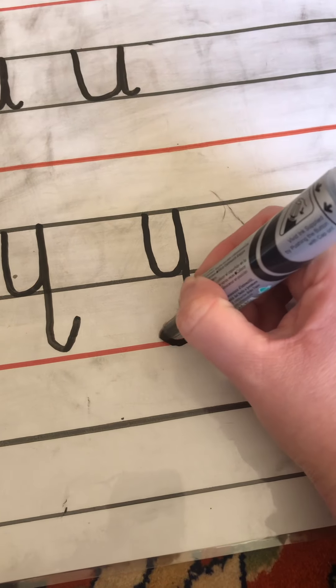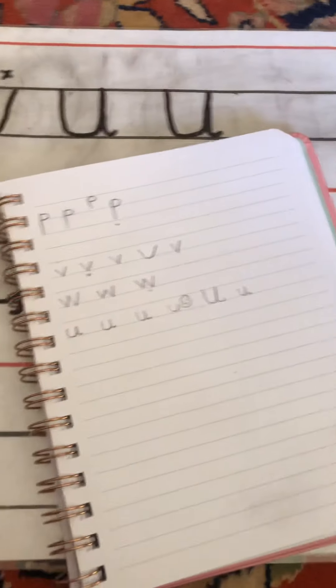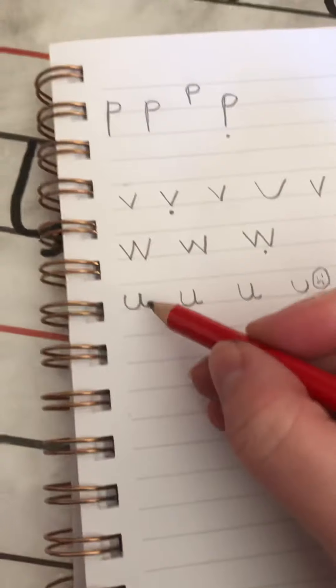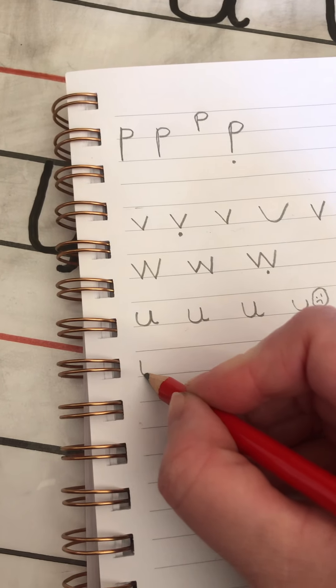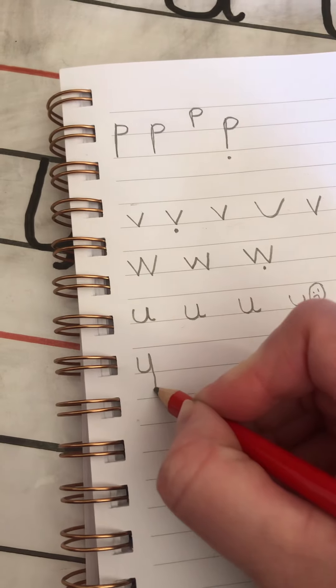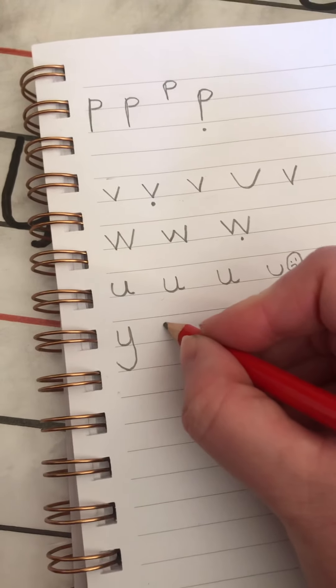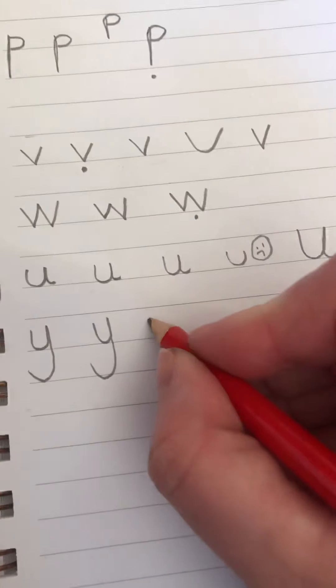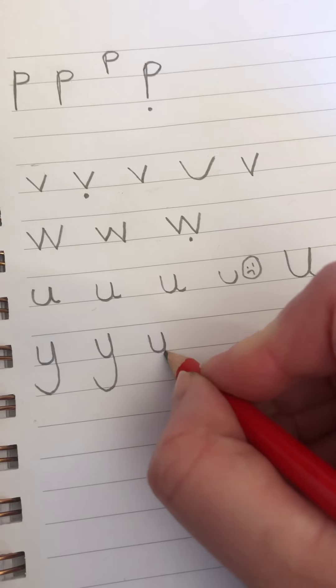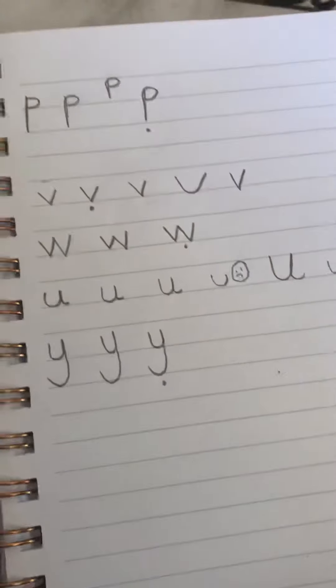And curl the tail sitting it on the line. So on your piece of paper, you start in a similar place to the U between these two lines. You go down the yak's face, up the yak's face, and sit his tail on the line. Just like that. Down the yak's face, up the yak's face, sitting his tail on the line. I think that one's my best one.